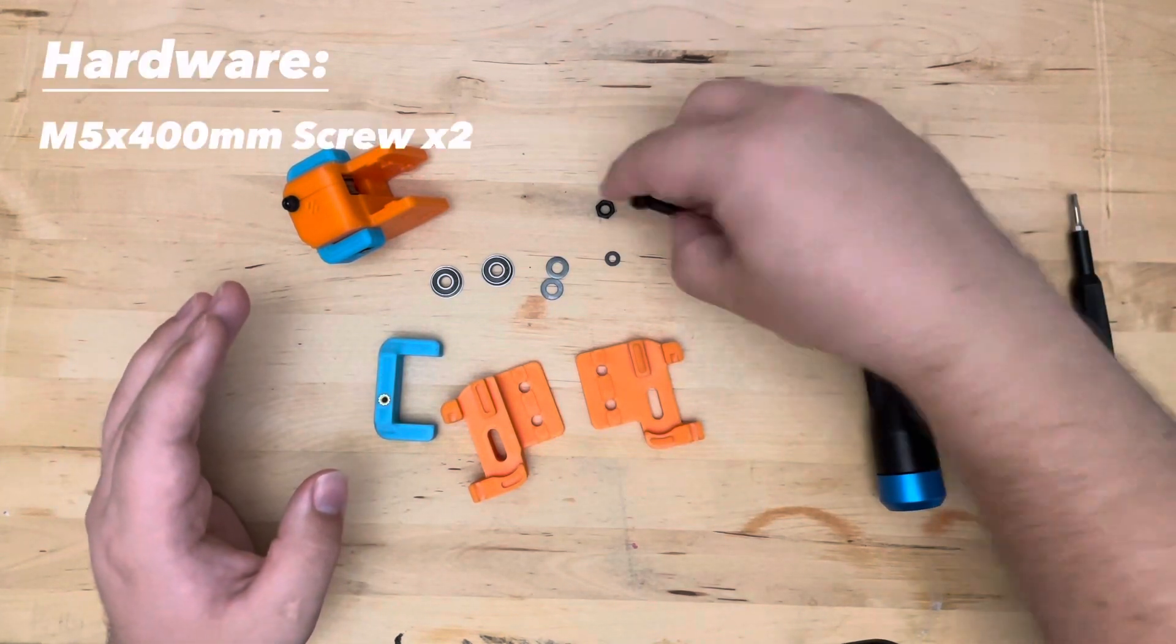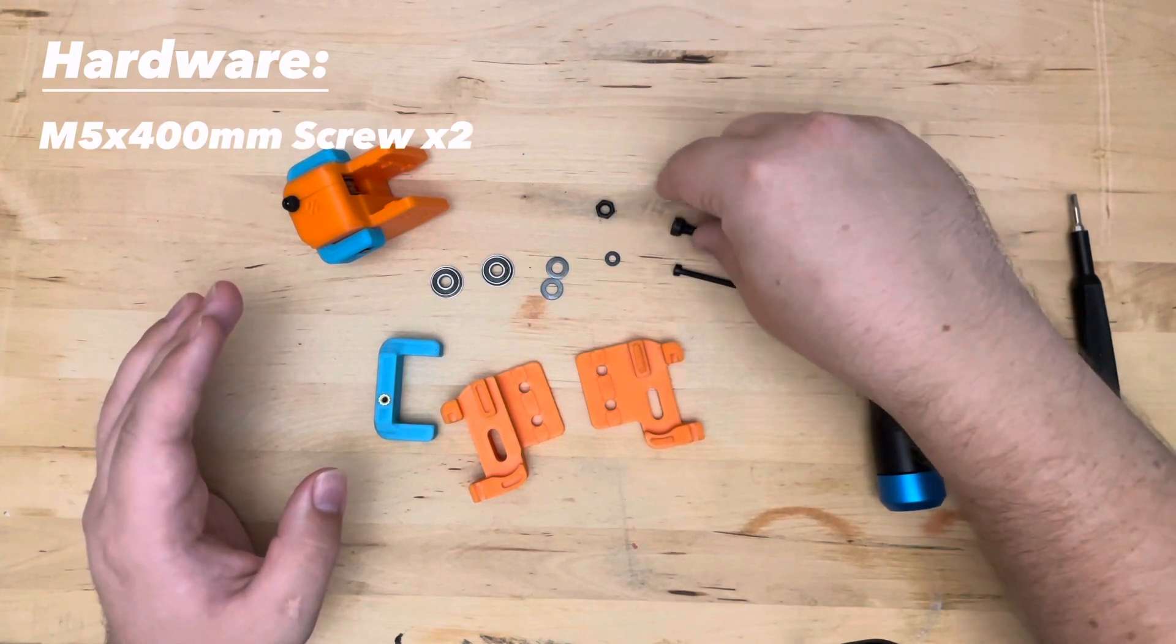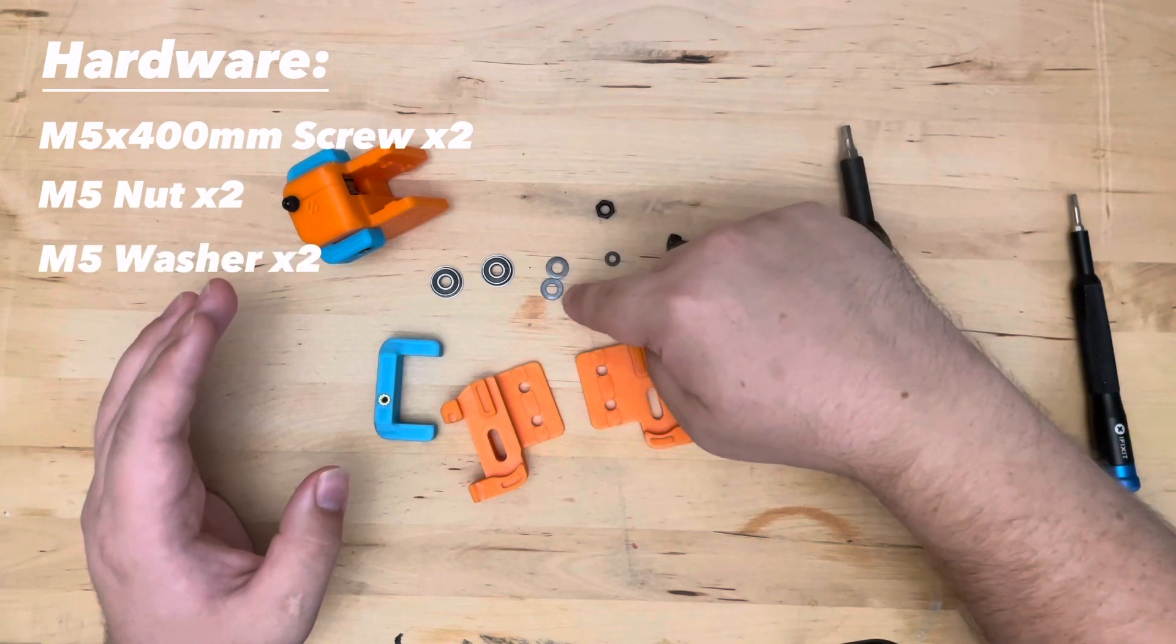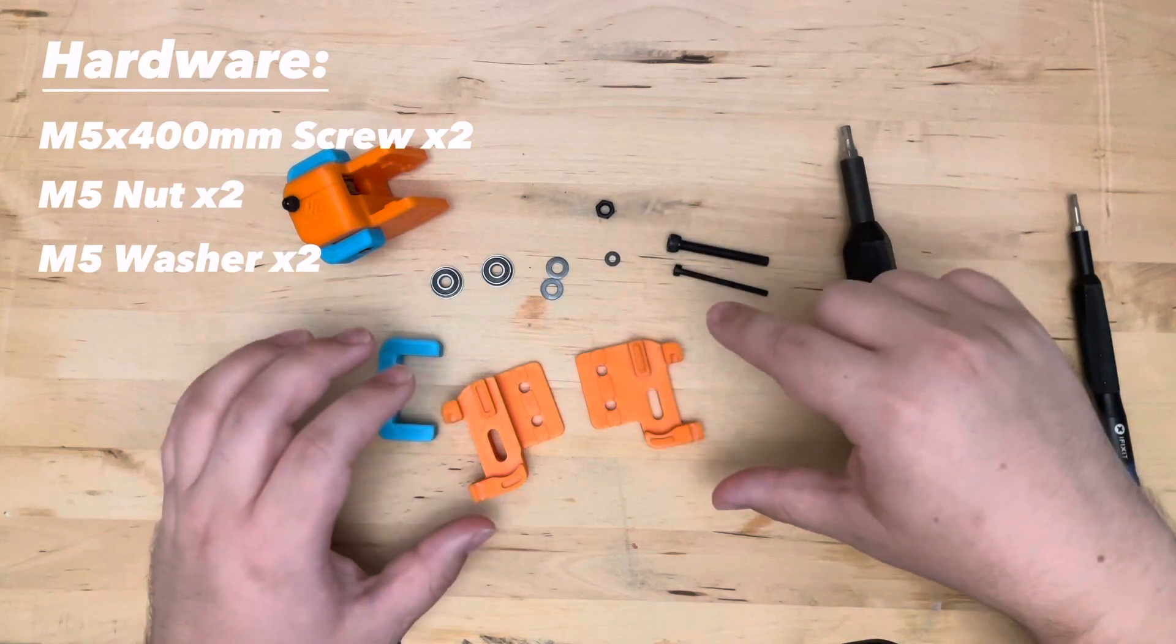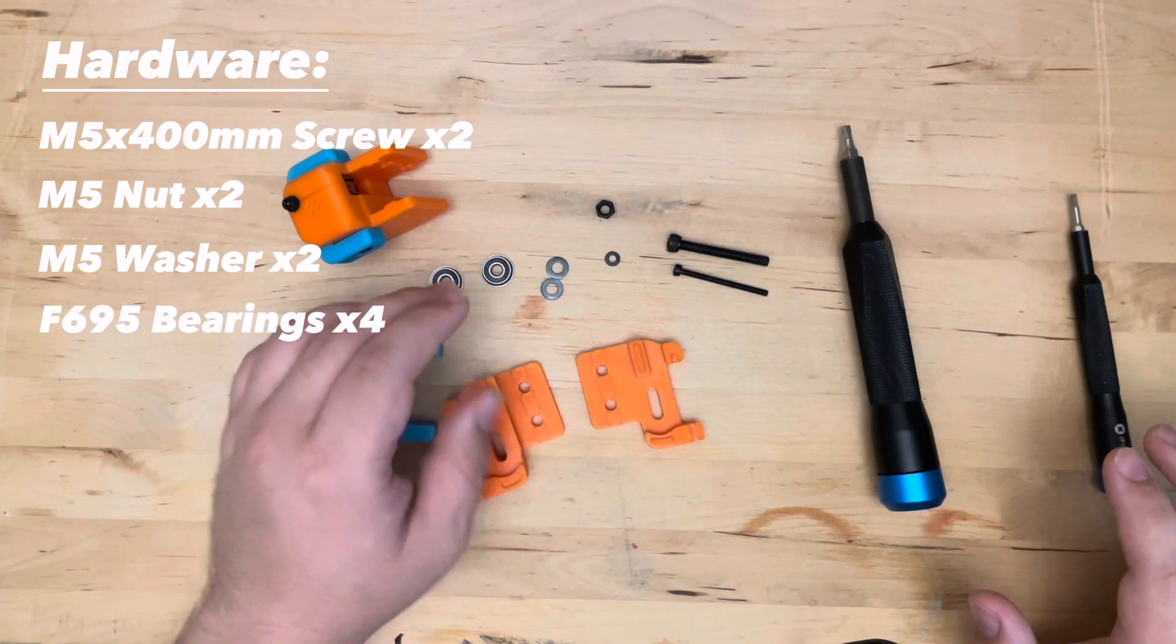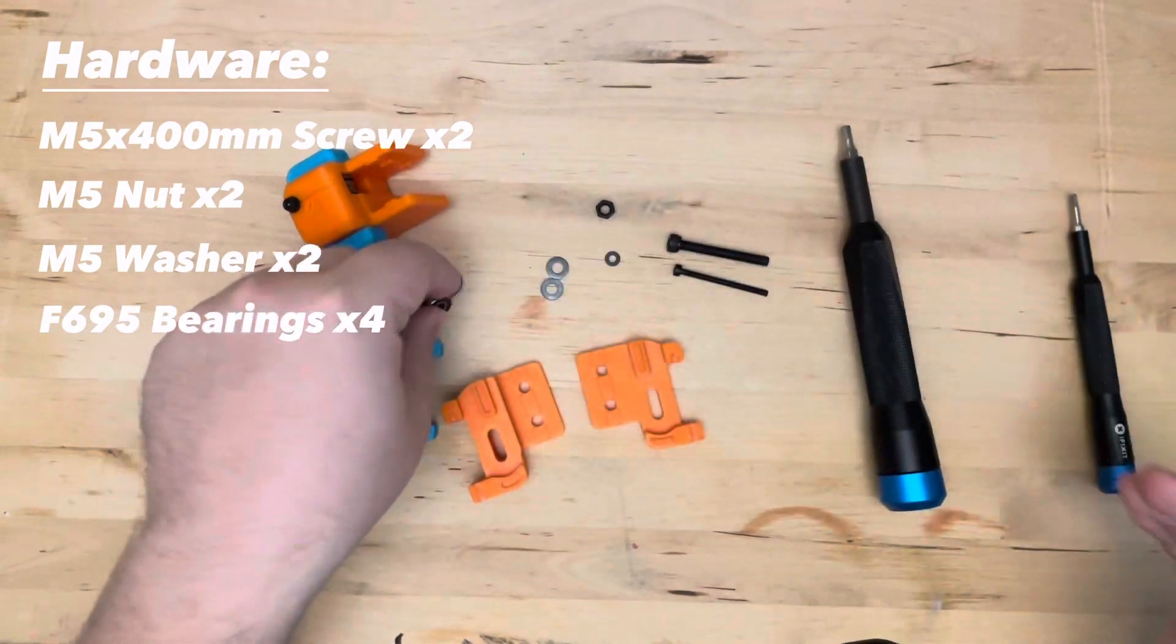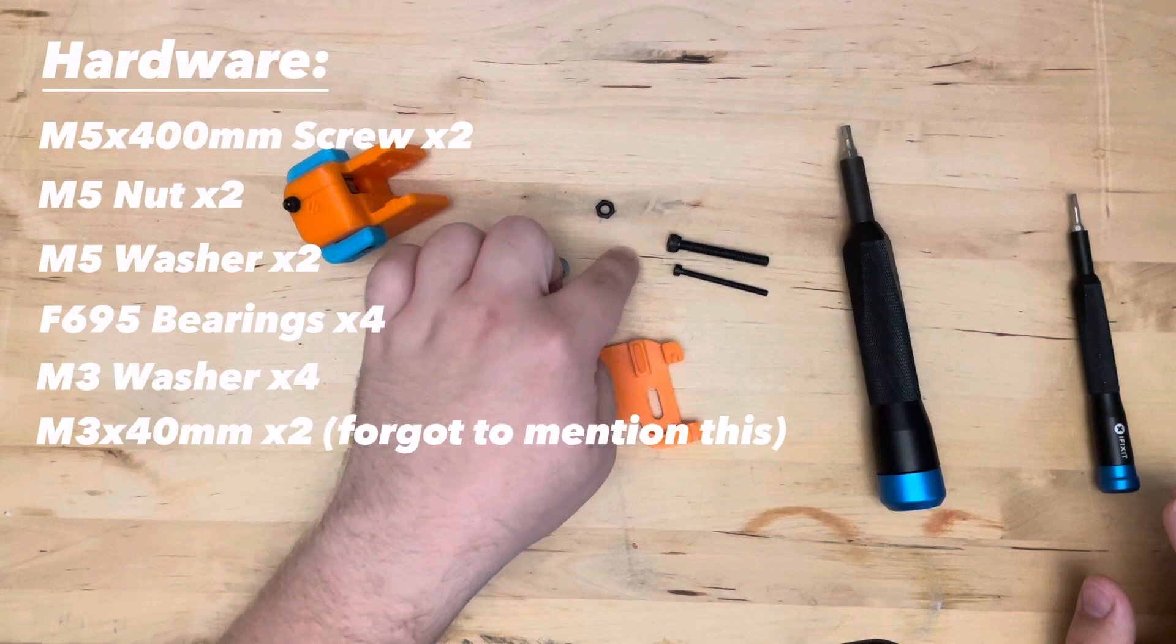For hardware, we've got an M5x40 screw, an M5 nut, M5 washers - you're going to need two of those per idler tensioner mechanism, and you're going to need two 695 flanged bearings. So these bearings have a little flange on them, and that's going to come in handy with holding the belt in place. You're also going to need an M3 washer.